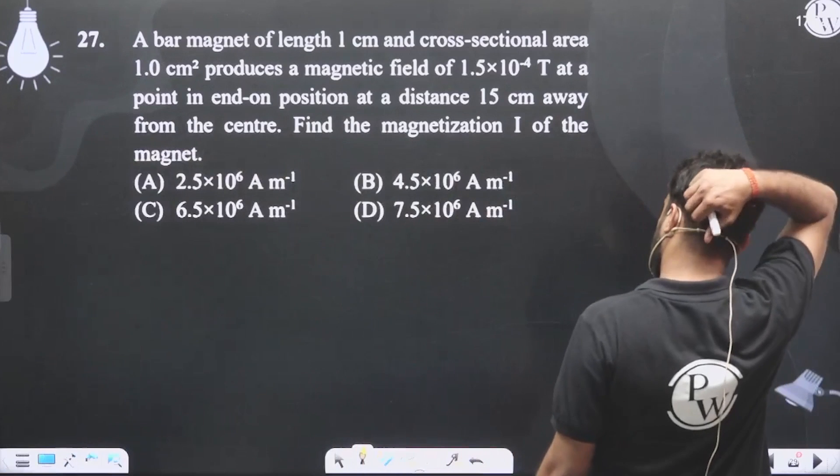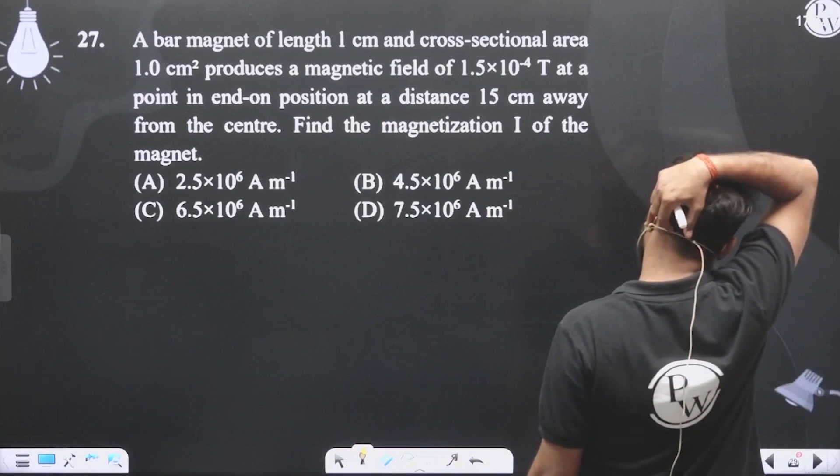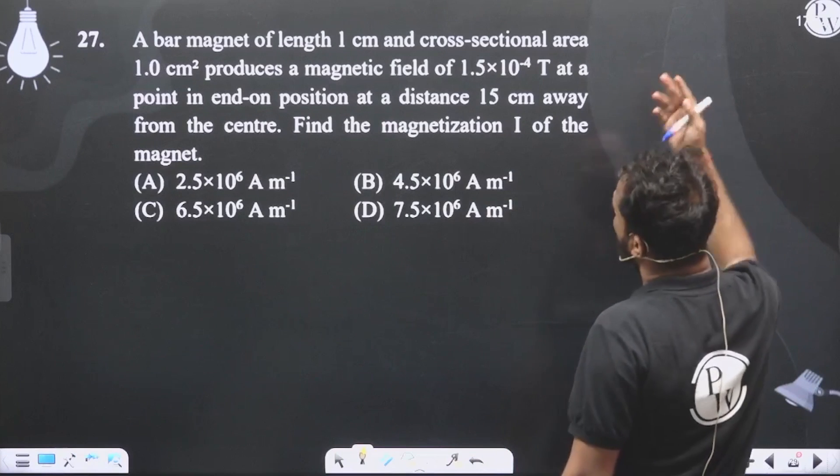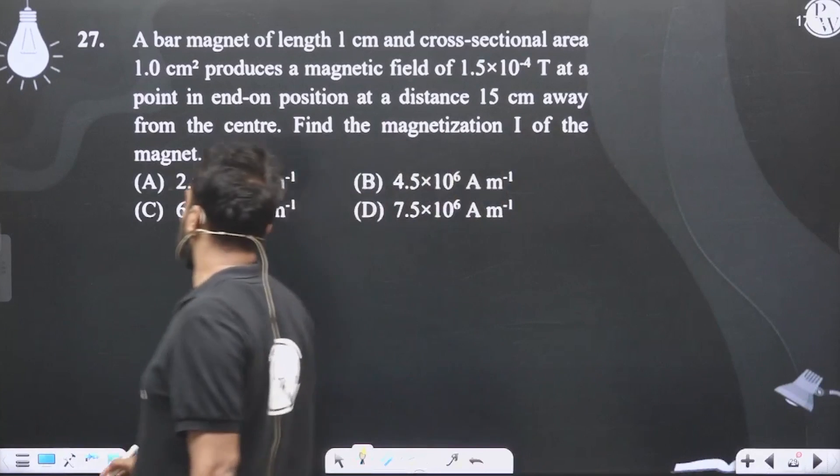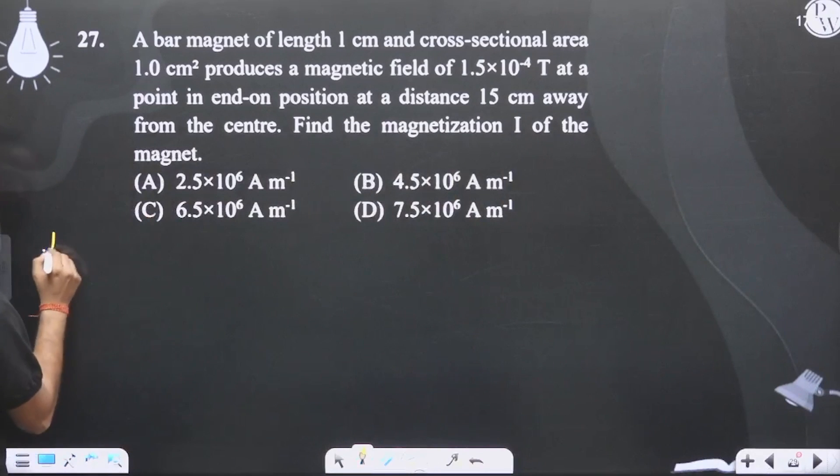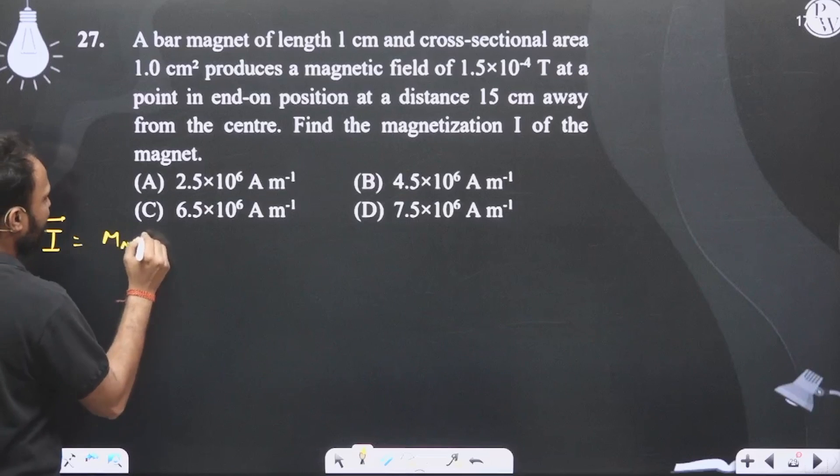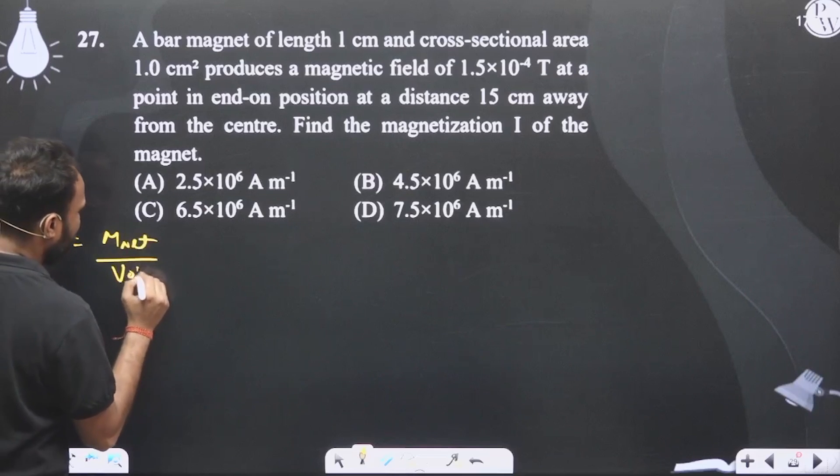Here we are talking about magnetization, which is magnetic moment per unit volume.